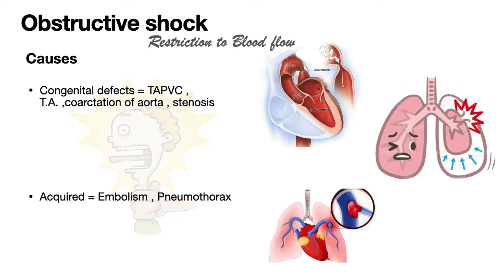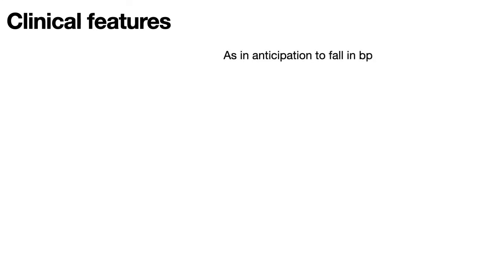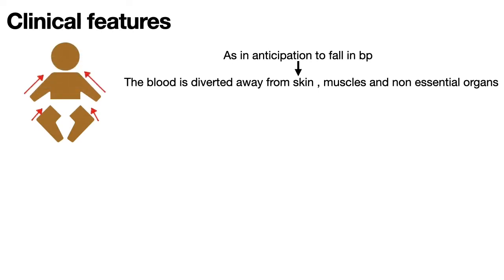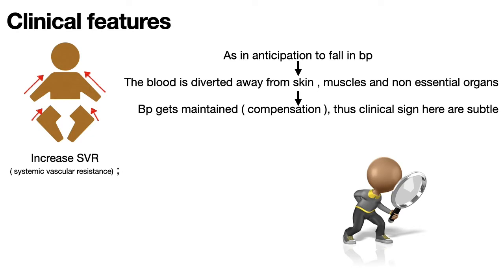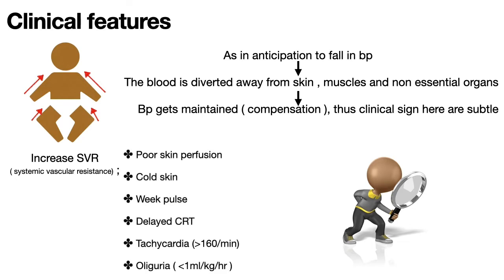Let's see some important clinical features in shock. As hypotension sets in, the first mechanism the body uses is directing blood away from skin and muscles — non-essential organs — to vital parts. This compensates for the fall in BP, giving a near-normal reading with subtle signs like poor perfusion, cold skin, weak pulses, delayed CRT, tachycardia, and oliguria. This is called compensated shock.